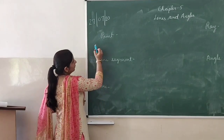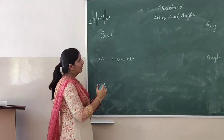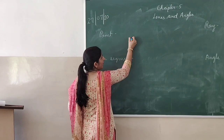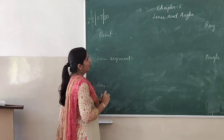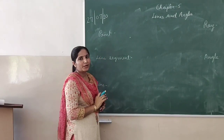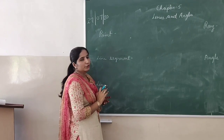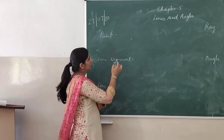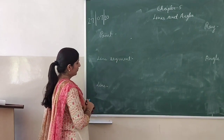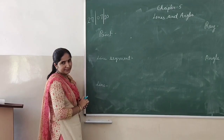The first thing you should know is what is a point. If you put a dot, it has no dimensions — no length, no breadth. So this is known as a point. Next we come to Line Segment.